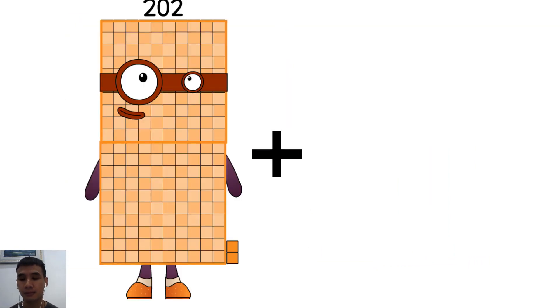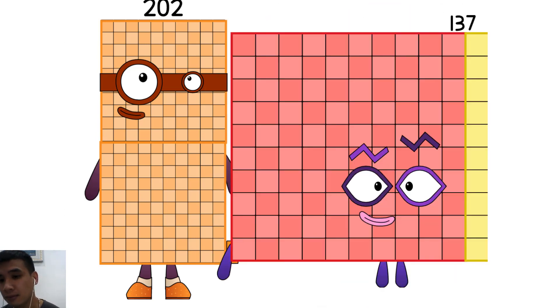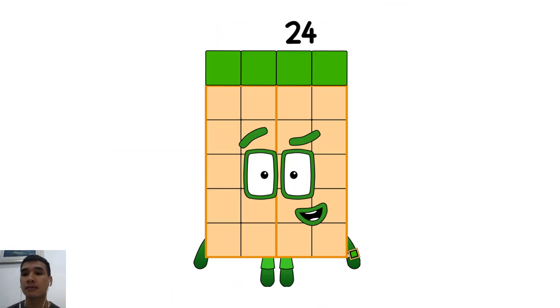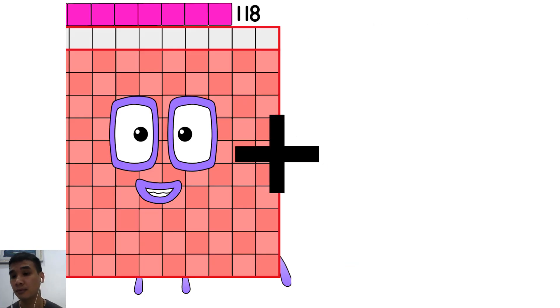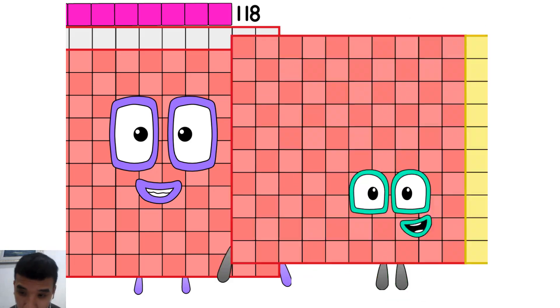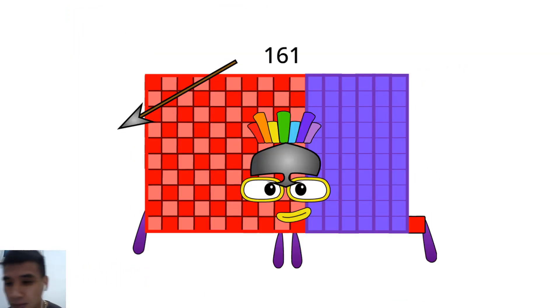202 plus 137 equals 24. 118 plus 43 equals 161.